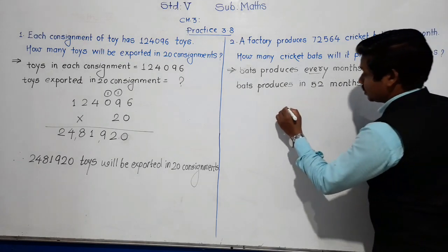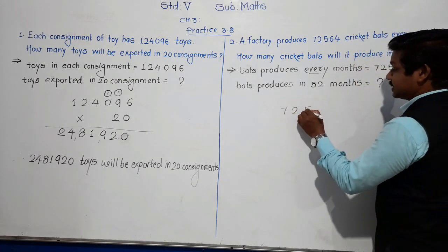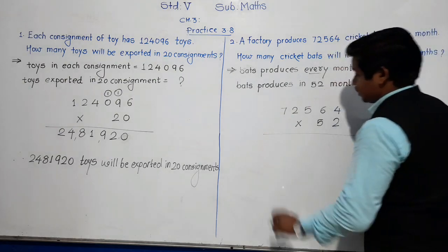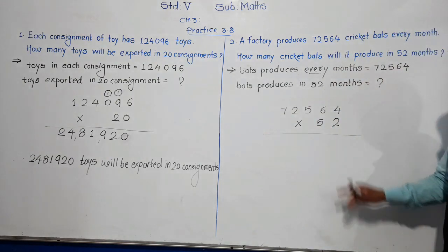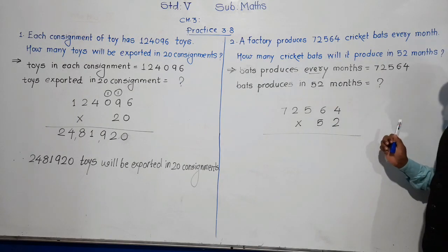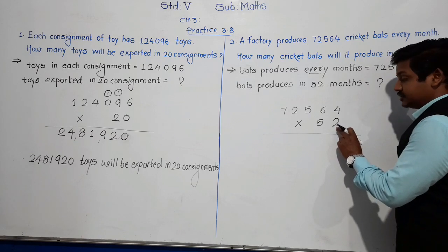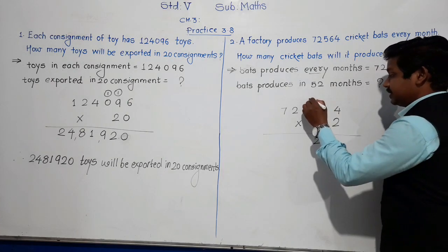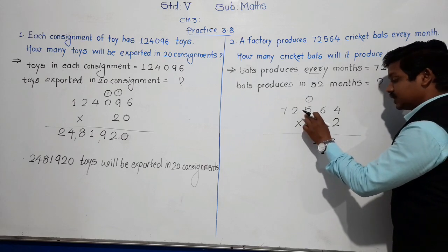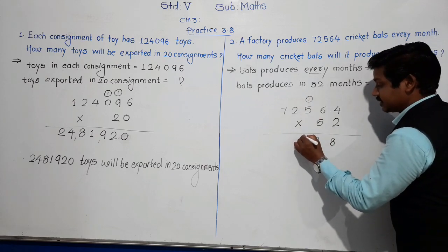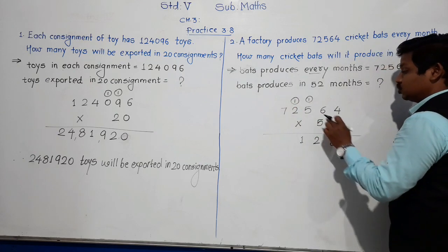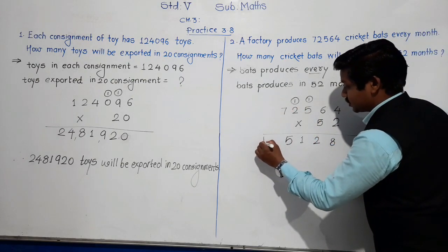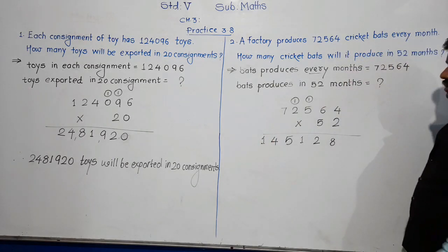Multiply 72,564 by 52. This is multiplication by a two-digit number. First multiply by the ones-place digit (2): 2×4=8; 2×6=12, write 2 carry 1; 2×5=10, 10+1=11, write 1 carry 1; 2×2=4, 4+1=5; 2×7=14. Now for the tens-place digit (5): cut the carry, put 0 at ones place.